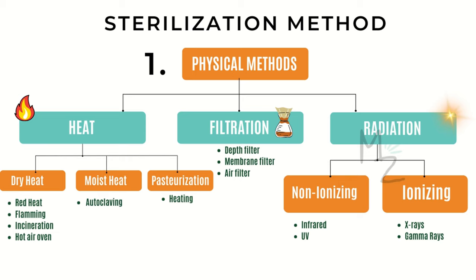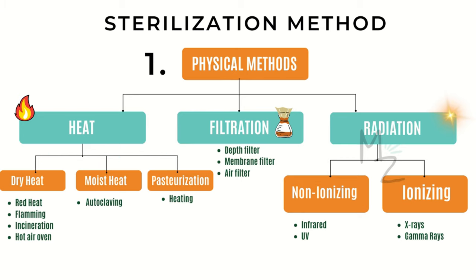In physical methods, physical agents act either by imparting energy in the form of heat or radiation, or by removing organisms through filtration. Heat energy can be applied in three ways: moist heat (by boiling or autoclaving), dry heat, or pasteurization. In general, heat kills by denaturing proteins, but membrane damage and enzymatic cleavage of DNA may also be involved.